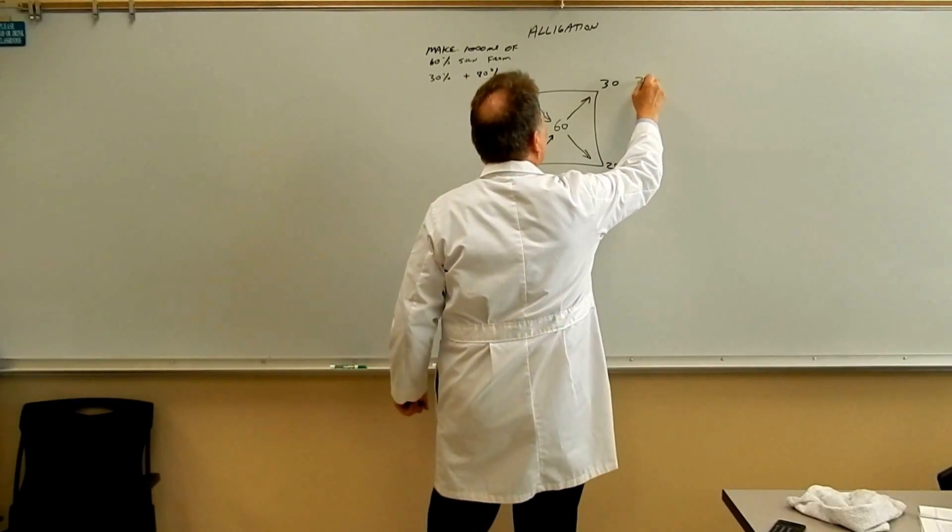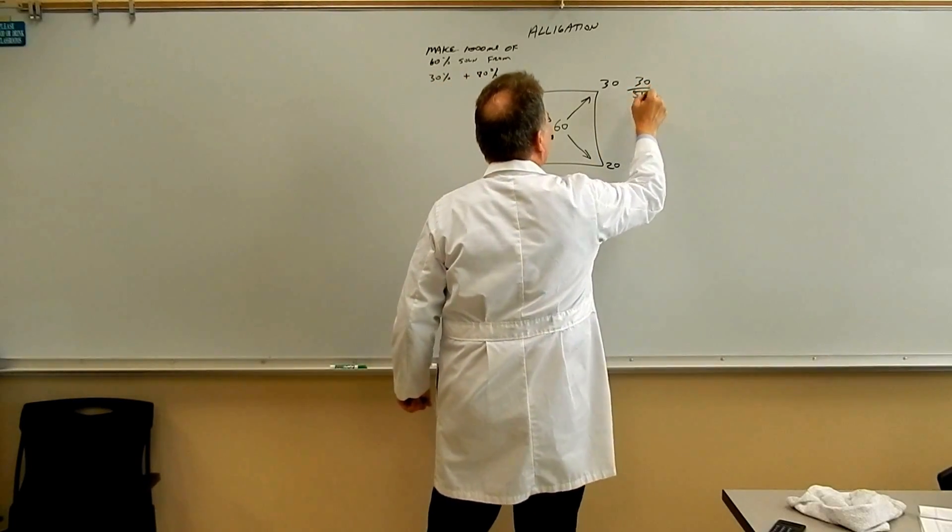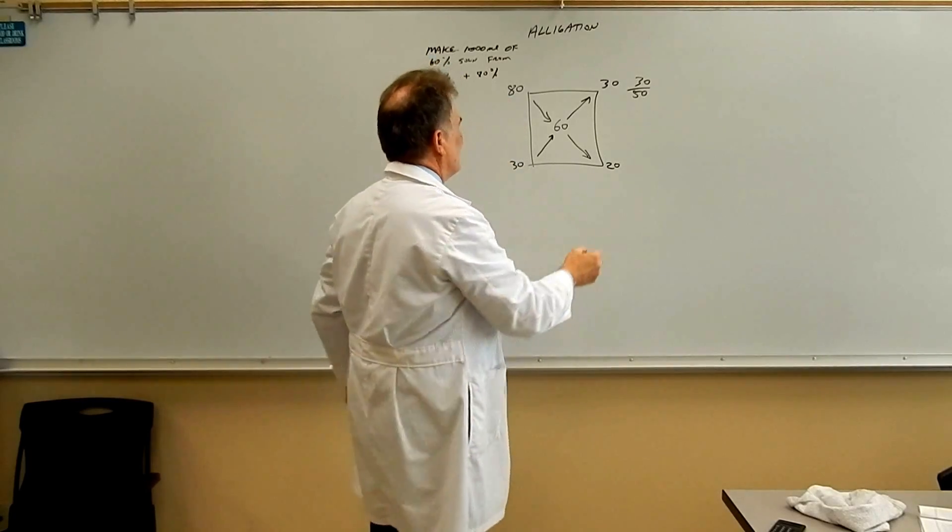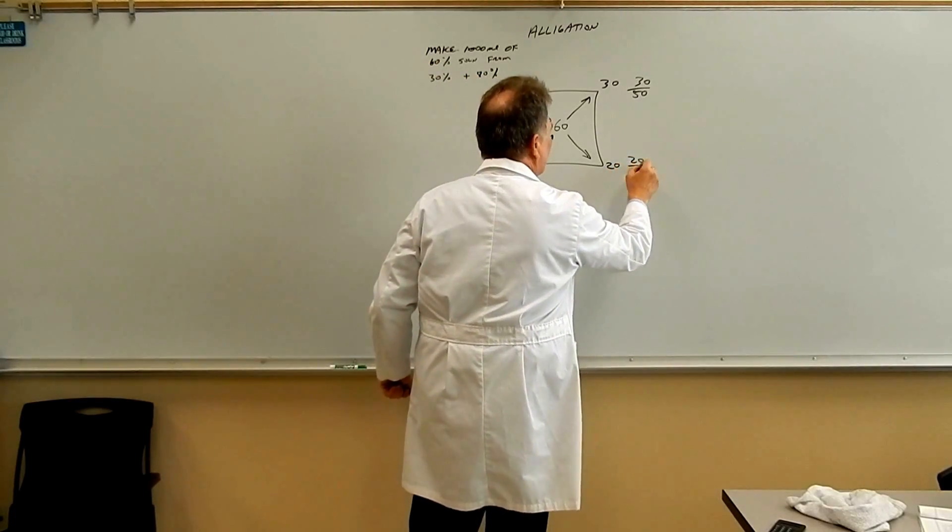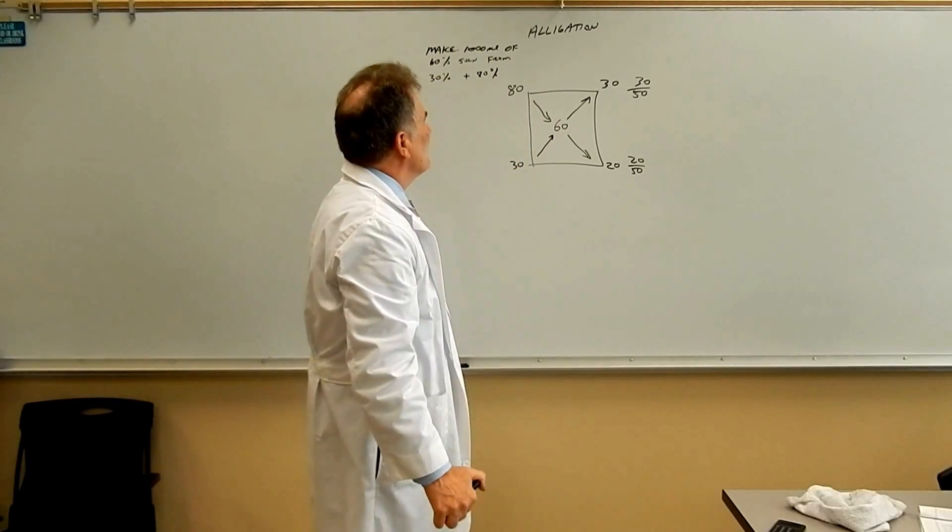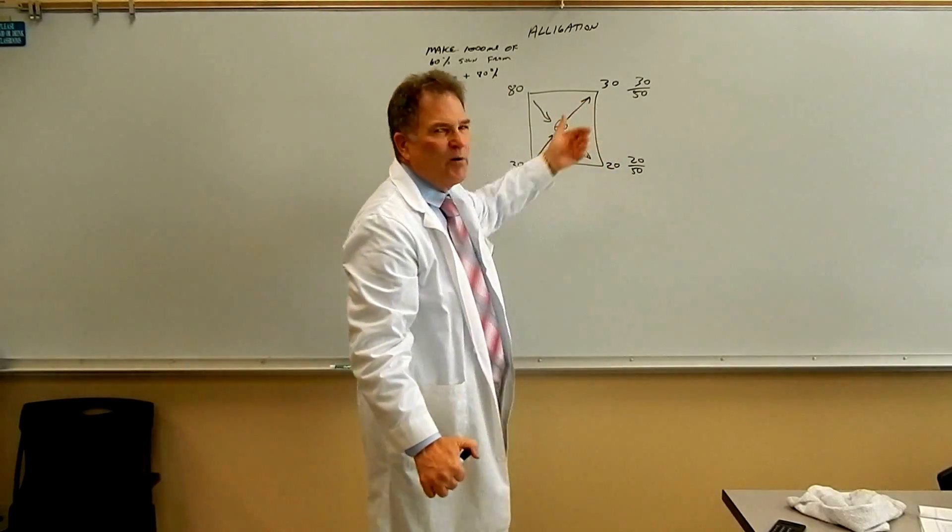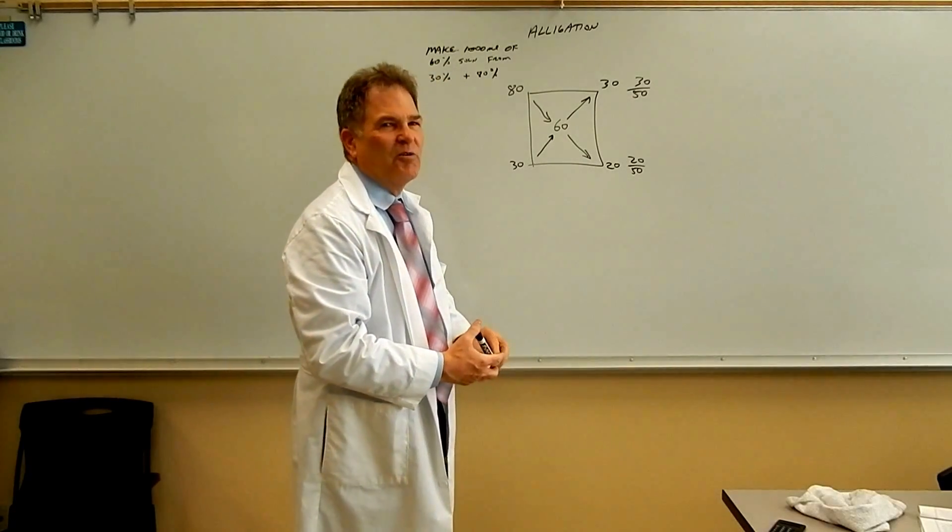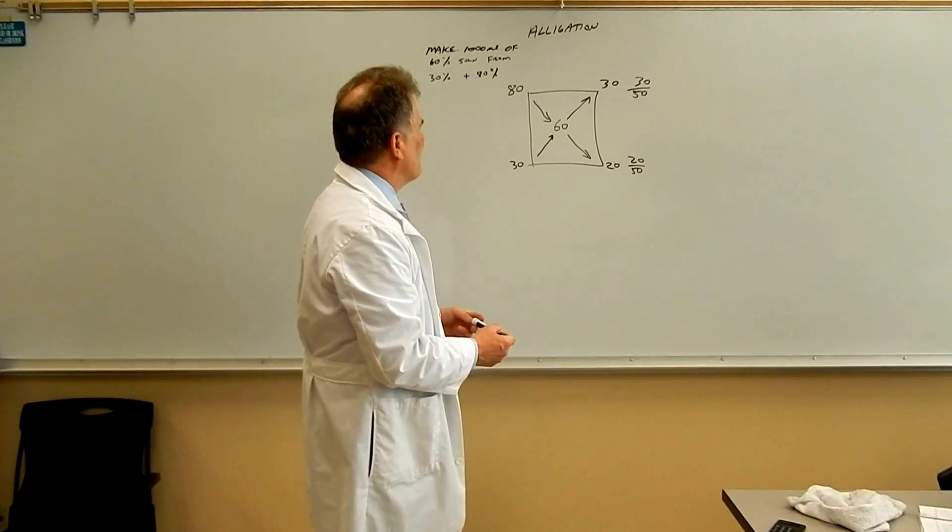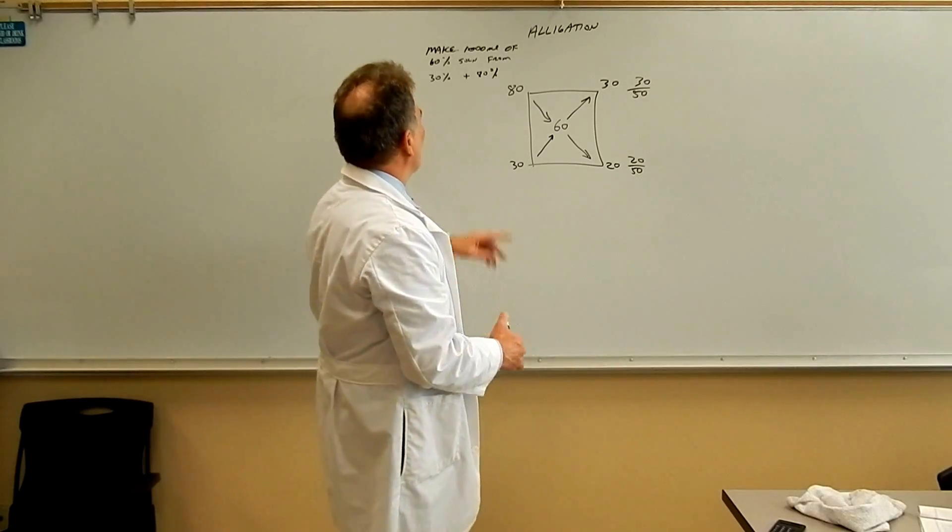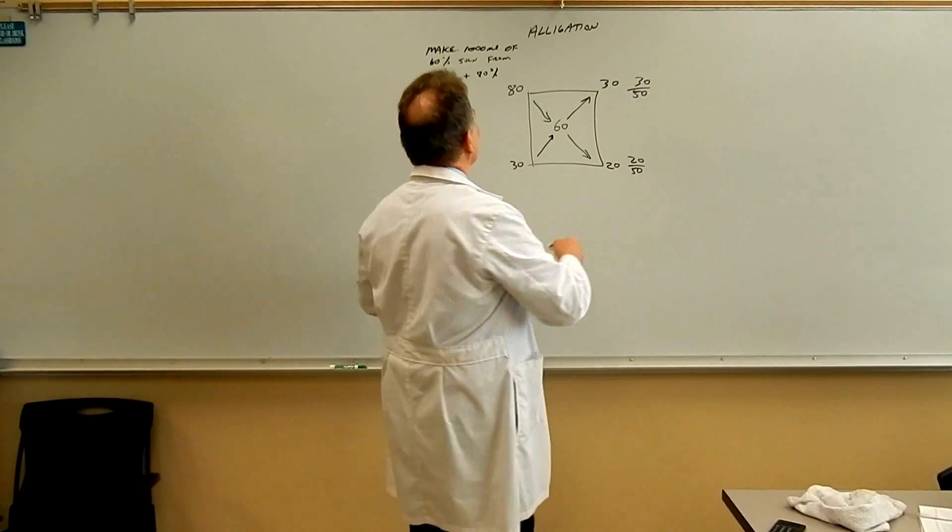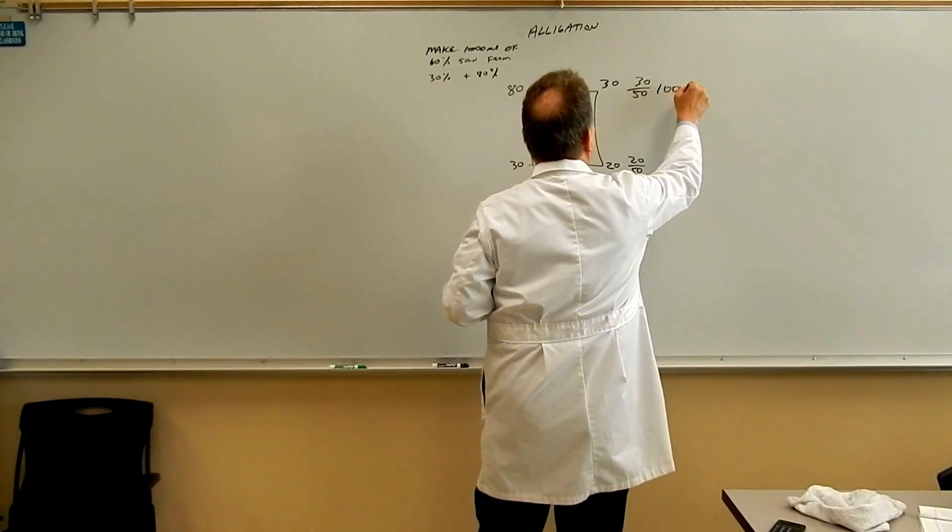You would have 30 fiftieths of the 80% and you would have 20 fiftieths of the 30%. So where we're at now is we have a ratio of how many parts of the 80 and how many parts of the 30%. And now all we do is insert how much we're going to make all together. We're going to make a thousand mLs.